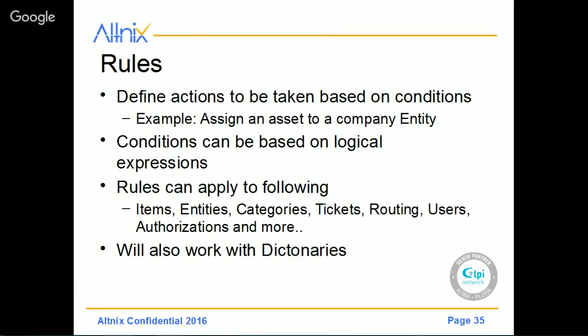Rules is another tool for automating a lot of actions — you can define actions to be taken based on certain conditions. For example, if you want to assign an asset to a company entity, you would define a rule that says, for these particular assets, assign them to company A. These could be conditions based on logical expressions, and that's the power of rules. Rules can be applied to different types of features inside GLPI — items, entities, tickets, routing users, authorizations, and many more. The rules also work with dictionaries, and we will cover them when we talk about the rule engine in a later presentation.